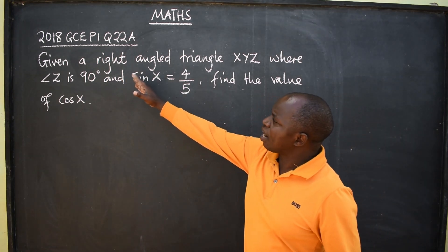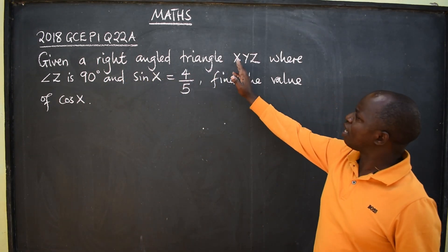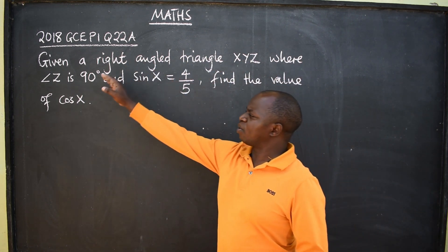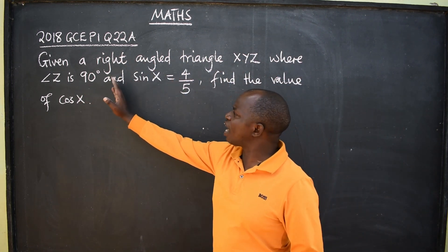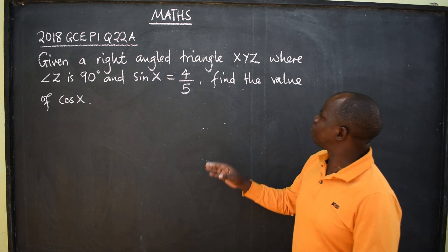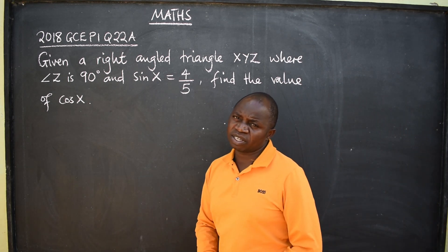Given a right-angled triangle XYZ, where angle Z is 90 degrees and sin x is equal to 4 over 5, find the value of cos x.